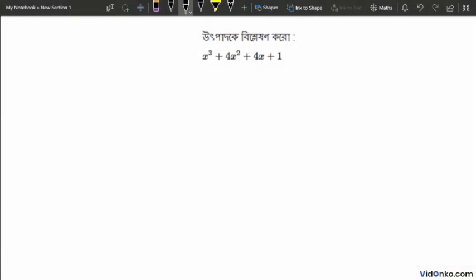Let's solve this factorization problem. We have x cube plus one plus 4x square plus 4x. So we can regroup this as x cube plus one plus 4x common length, giving us x plus one.